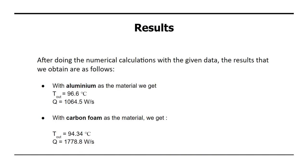The results that we obtained are after doing the numerical calculations with the given data, the results that we obtain are as follows. With aluminium as the material we get T out is equal to 96.6 degrees celsius and q is equal to 1064.5 watts per second, while if we use carbon foam as the material we get T out is equal to 94.34 degrees celsius and q is 1778.8 watts per second.